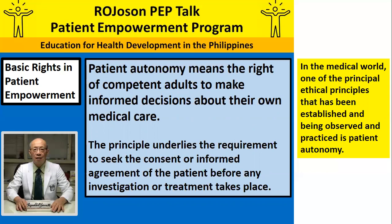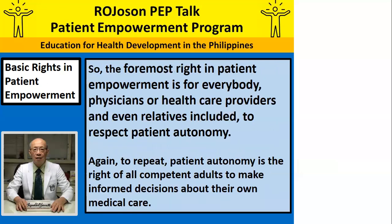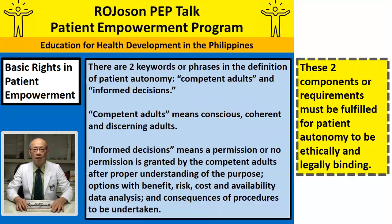This principle underlies the requirement to seek the consent or informed agreement of the patients before any investigation or treatment takes place. The foremost right in patient empowerment is for everybody — physicians, health care providers, and even relatives — to respect patient autonomy. There are two key words in the definition of patient autonomy: competent adults and informed decisions.